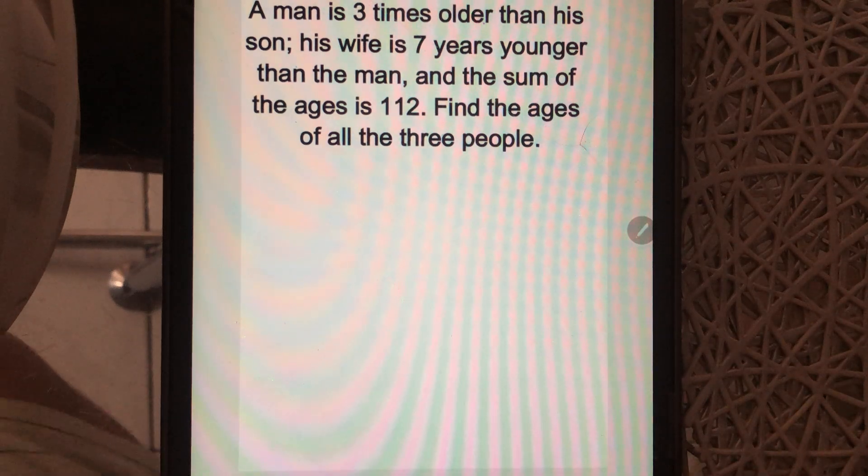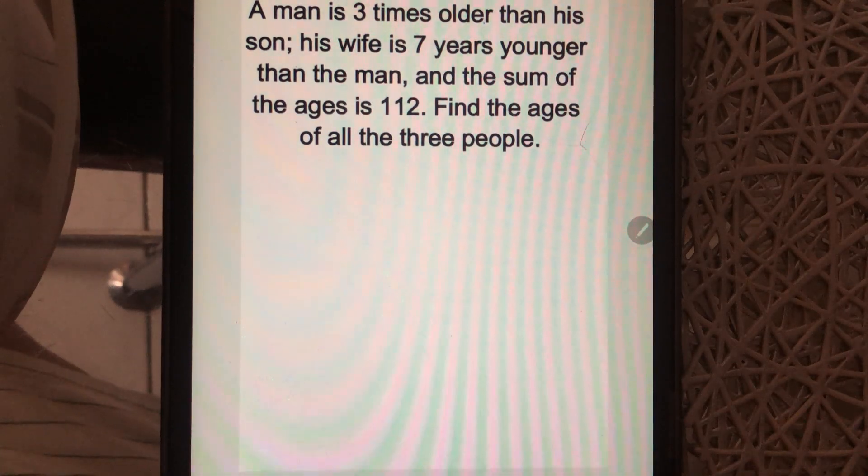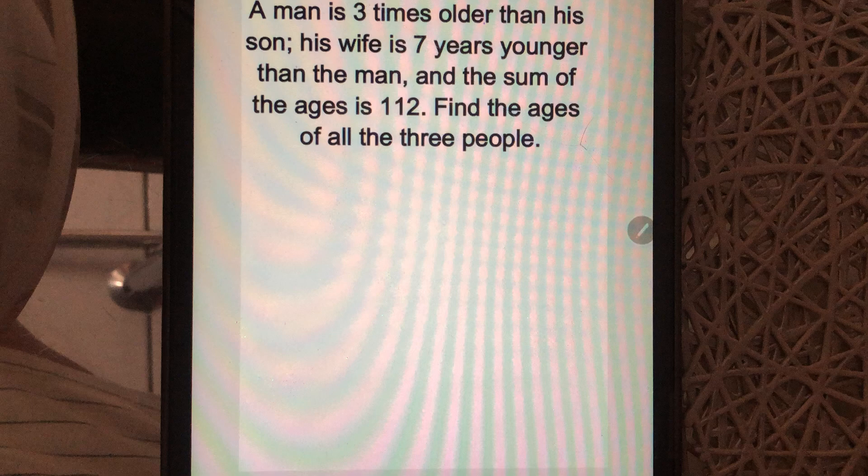In this video, we are given a word problem. A man is three times older than his son. His wife is seven years younger than the man. And the sum of their ages is 112. Find the ages of all the three people.